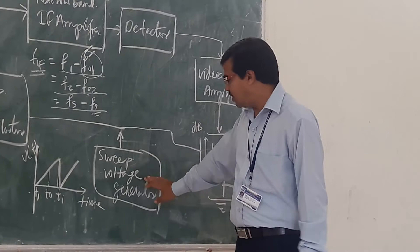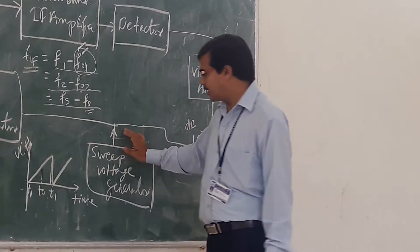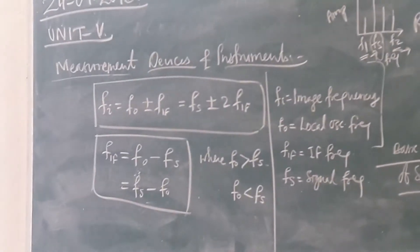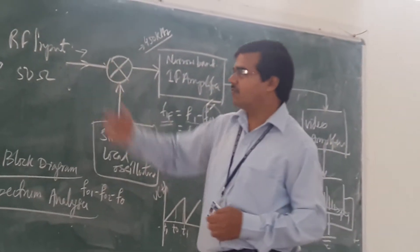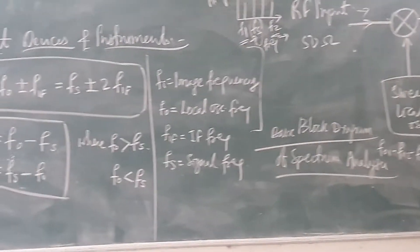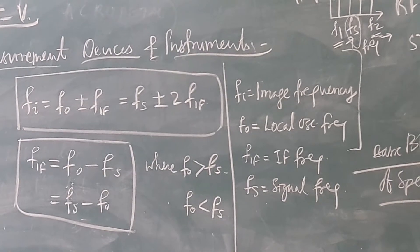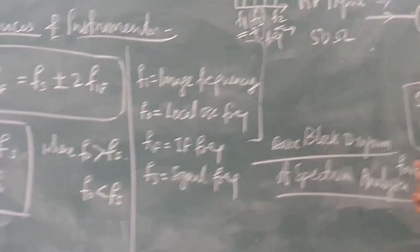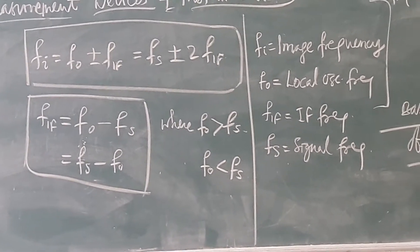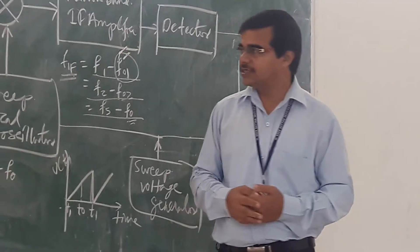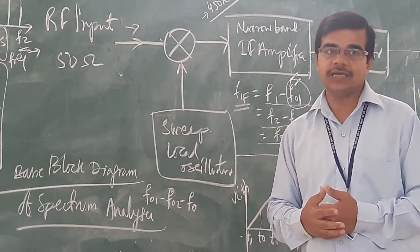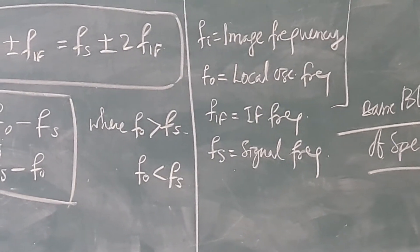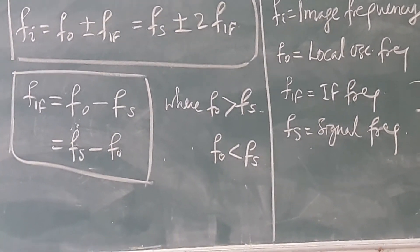The image frequency is equal to the local oscillator frequency plus or minus the IF frequency, which is also equal to the signal frequency plus or minus twice the IF frequency. The IF frequency equals the local oscillator frequency minus the signal frequency, when the local oscillator frequency is greater than the signal frequency. Conversely, the IF frequency equals the signal frequency minus the local oscillator frequency when the signal frequency is greater.